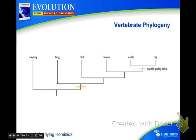That vertical branch — does whatever this vertical branch represents, does the lamprey have? No. Does the human have? Yes. Remember, every time we go up with this step, everything before that step that creature has. So this would be something like backbone, forelimbs, amniotic egg, body hair, and then double-pulley ankle.